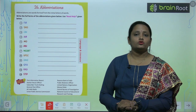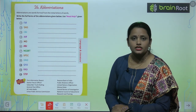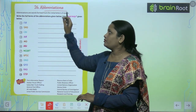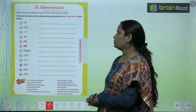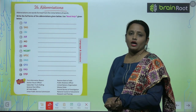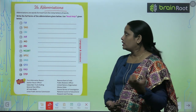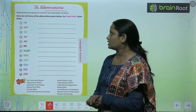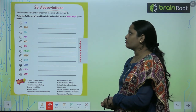Let's move on to the next chapter, which is chapter number 26, and the name of the chapter is Abbreviations. Abbreviations are words formed from the initial letter of words. Write the full form of the abbreviations given below.